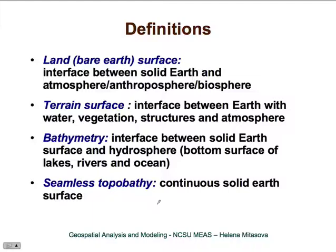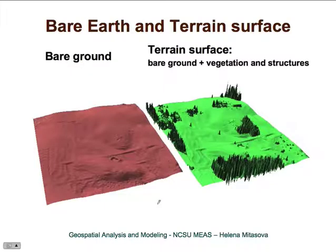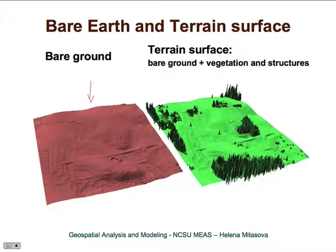We also often talk about seamless topobathy, which is a continuous solid earth surface that smoothly changes from bathymetry to bare earth surface. We have already seen the picture that essentially shows the difference between bare earth surface and terrain surface, which includes also vegetation and buildings.